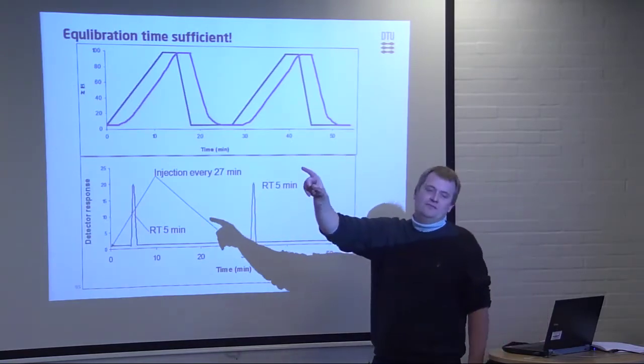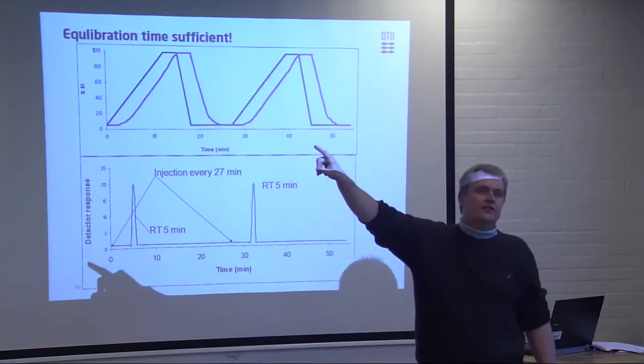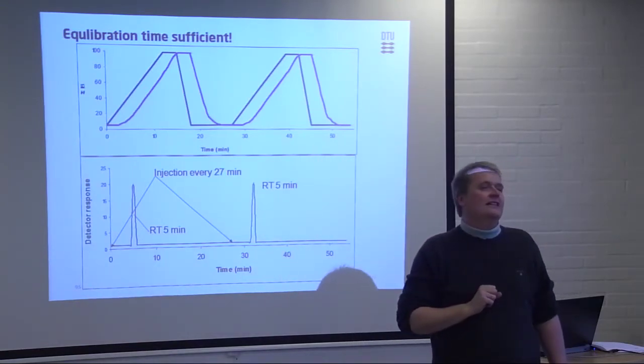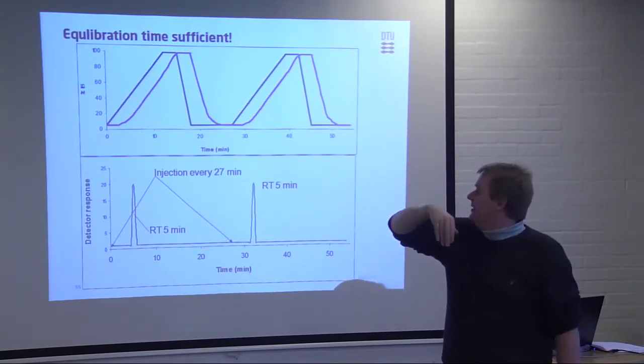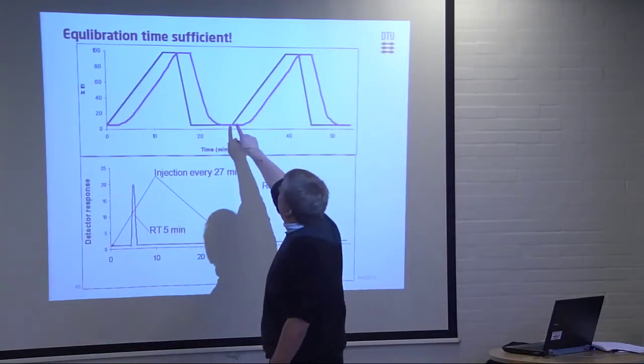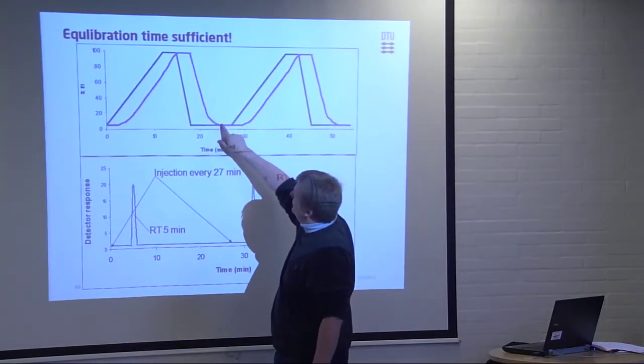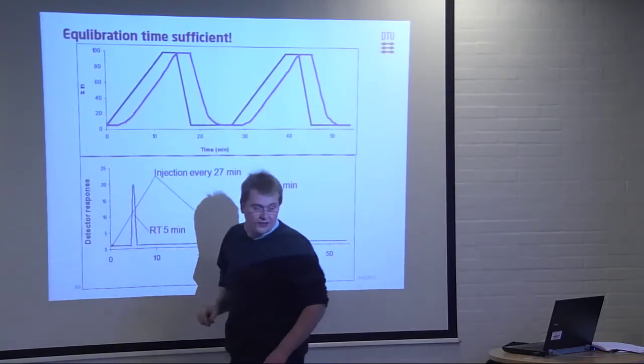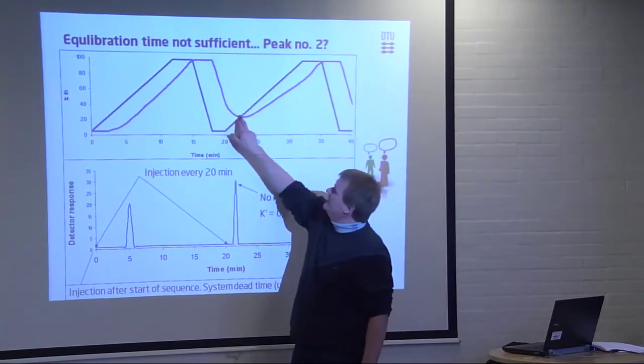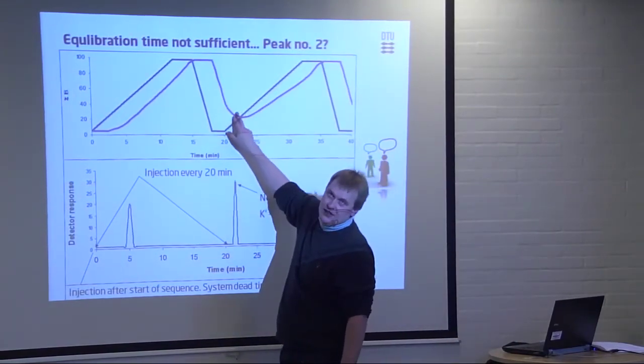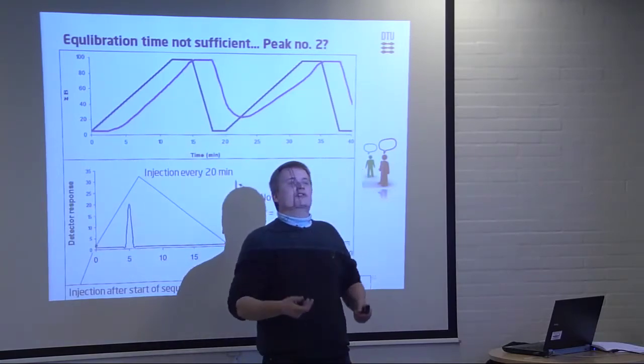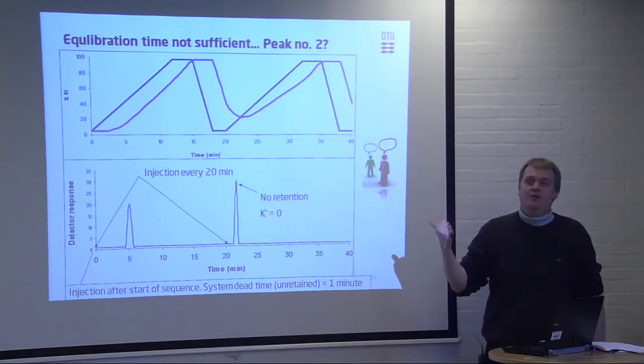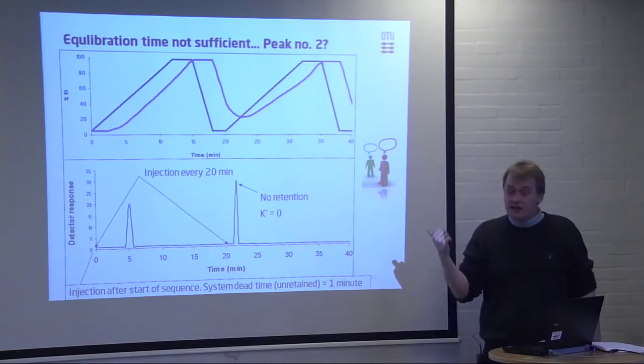You could actually have seen this. You recall the curve I showed you of the pressure of the system. And there you would see the pressure would not really have gone as high, because, you know, when you have the pressure when you're here, should be the same here. So, in this situation, you would have seen that I have a lower pressure, because I actually have more acetonitrile. So, looking at the pressure curves could also have told you this. But this is the most common error I see, and I see it a lot, also with quite experienced people.